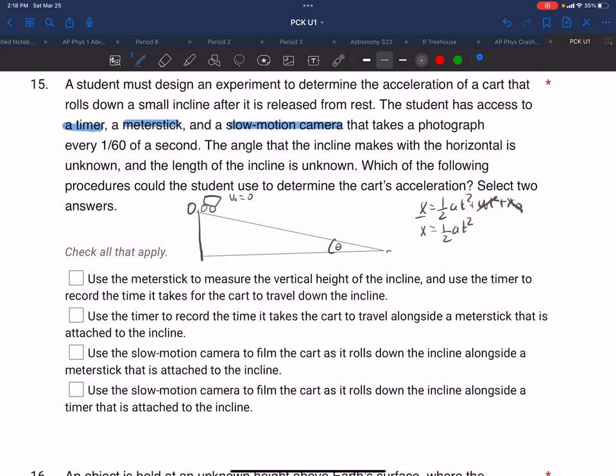So the first choice: use the meter stick to measure the vertical height. So we're going to measure delta z and use the timer to record the time it takes for the cart to travel down the incline. Well, that would give us this time, but it's not giving us this x. So that can't be right.